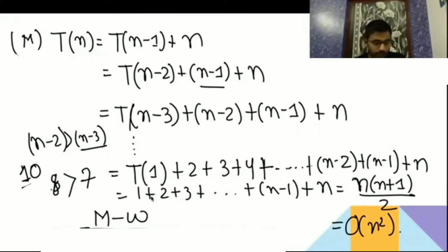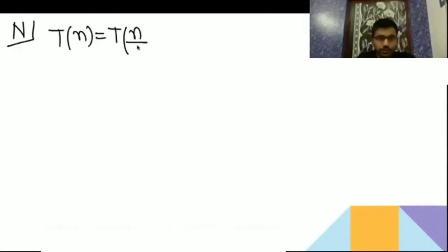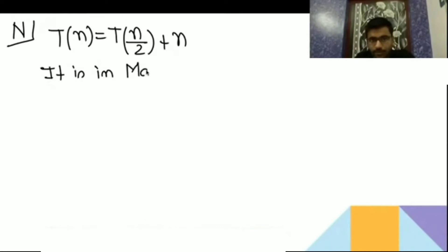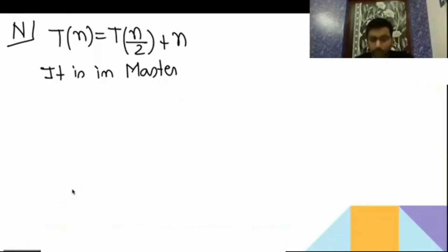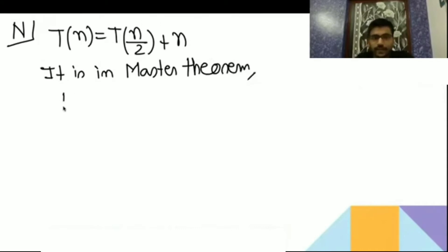If you are done writing, please let me know and I will go to the next option. Option N: T(n) = T(n/2) + n. Now this is in Master Theorem. That is why I have taught you everything, because in questions it is going to be required.